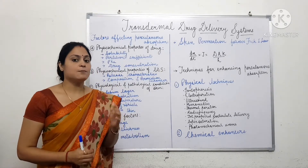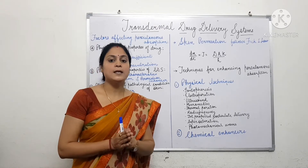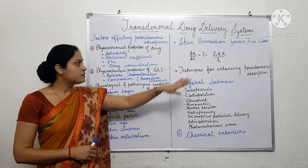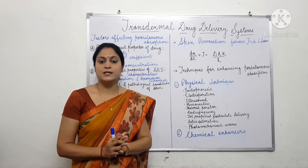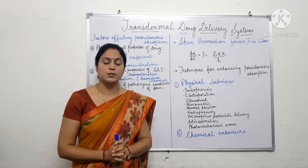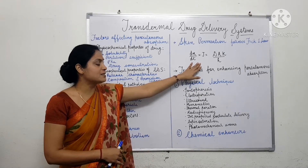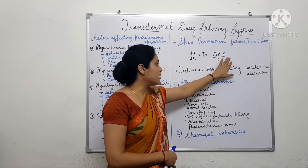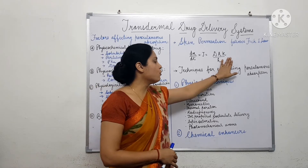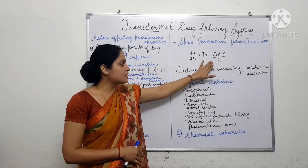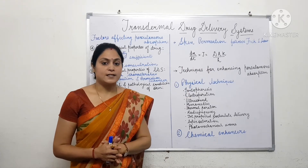This is the basic mechanism of percutaneous absorption. This percutaneous absorption occurs preferably through passive diffusion, and follows Fick's First Law of Diffusion, which states that drug molecules diffuse from the region of higher concentration to the region of lower concentration. The flux, or rate of diffusion, is directly proportional to the surface area of the membrane through which drug has to be permeated, and to the partition coefficient of the drug, and inversely proportional to the thickness of the skin through which drug has to be permeated.